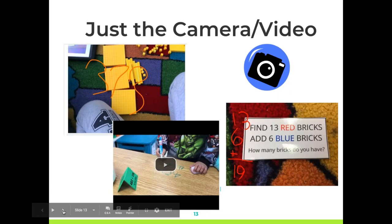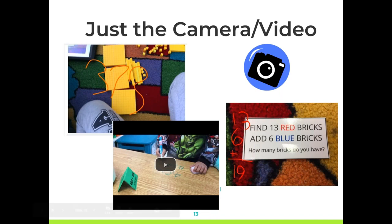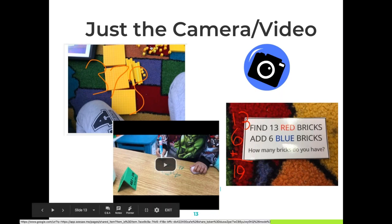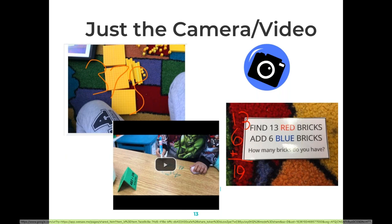Now jumping to math. What I love is just the camera — the camera and video is so powerful. The first example is place value: students have taken the place value blocks and entered the number 373. Quick assessment for me — great formative assessment to see if they're understanding it or not. We do a lot of stuff with Legos and have a large Lego collection in our classroom. So we do Lego math with simple questions like: find 13 red bricks, add six blue bricks, and how many bricks do you have? They show their work and usually record themselves telling me how they solved the problem.